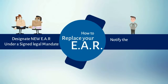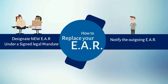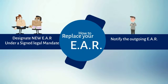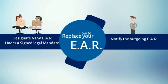2. The outgoing EAR needs to be notified by the manufacturer that from this day forth the new EAR will take over. In case of class 2A, 2B, or 3 medical devices, the notified body needs to be notified of this change. And in the case of class 1 medical devices, the EU authorities need to be notified of this change.